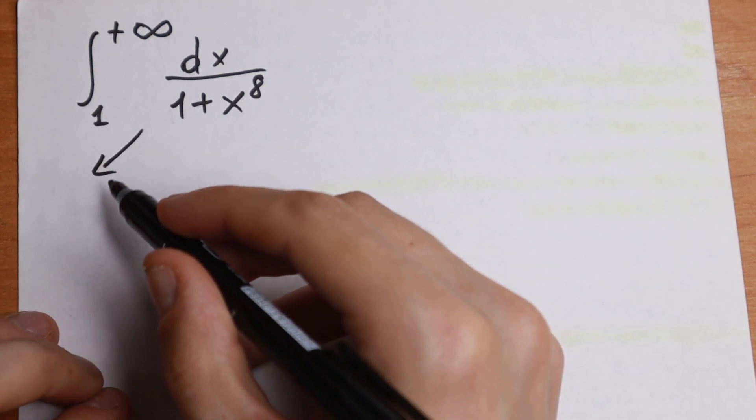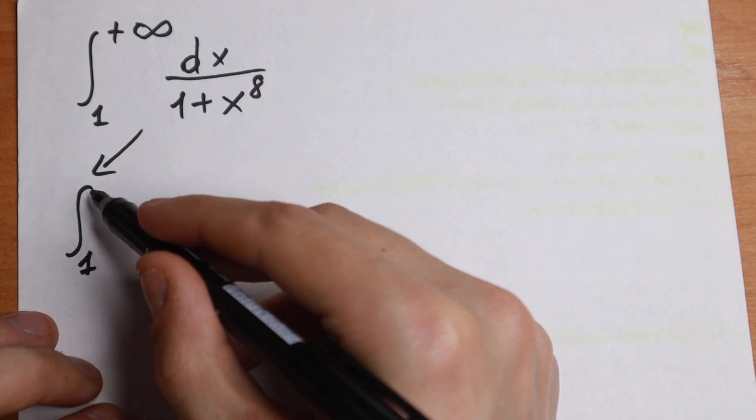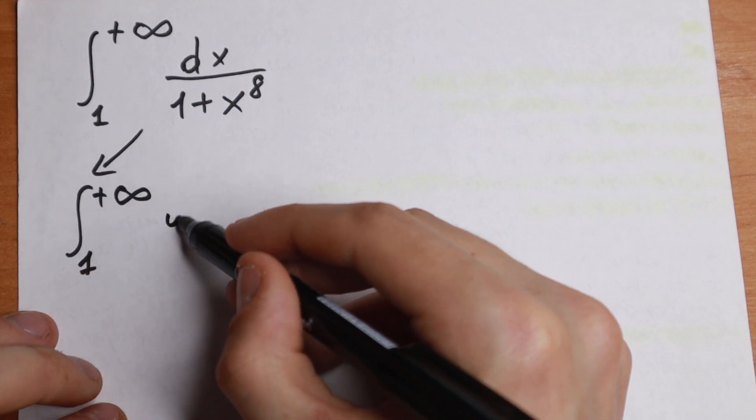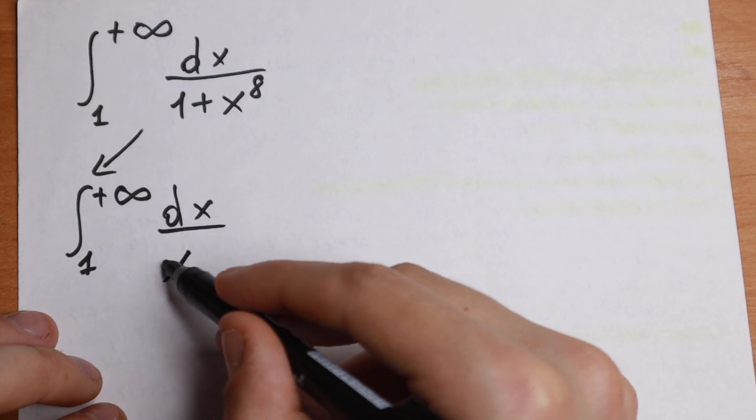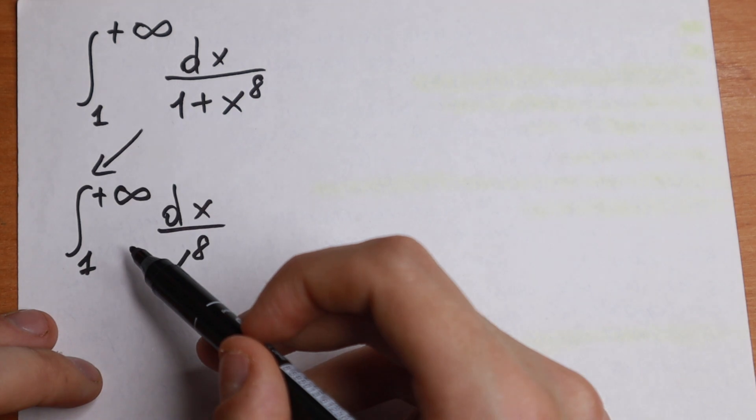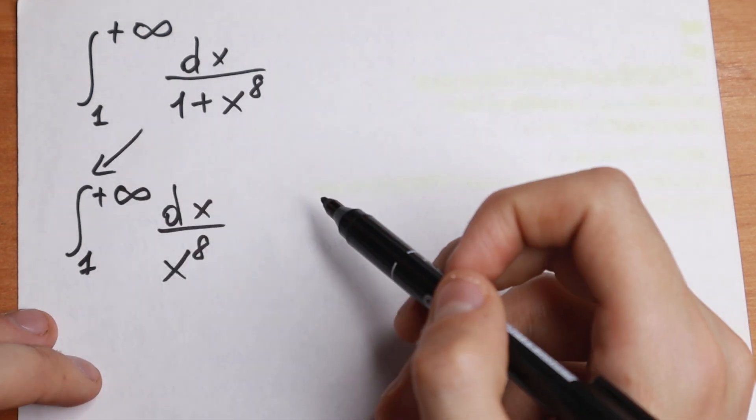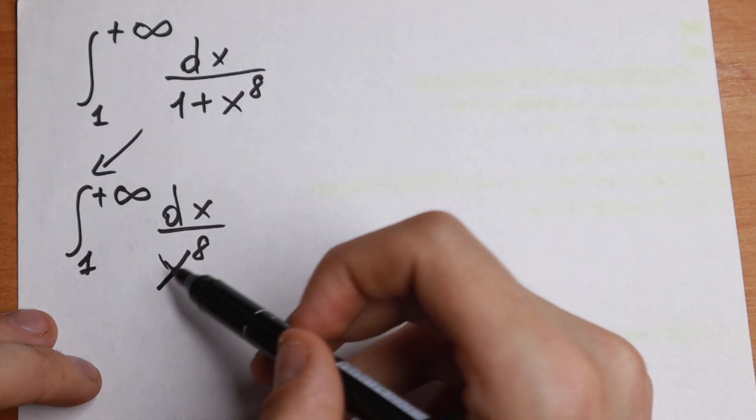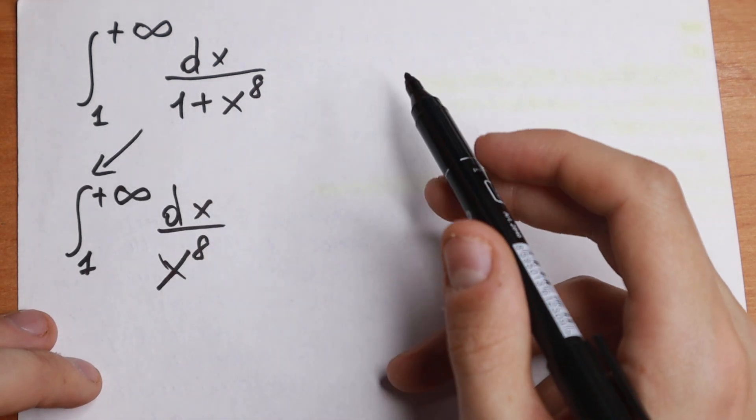So if we rewrite this integral as the integral from 1 to plus infinity of dx over x to the 8th power, we just leave this one right here. Because if we solve this one, we can easily have information about this one. So this is a good case, you can leave a constant in the denominator.